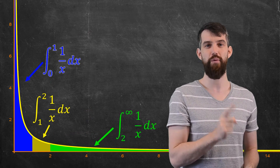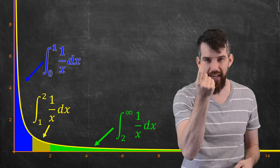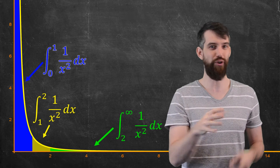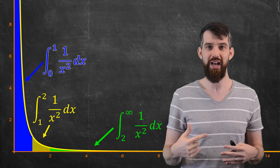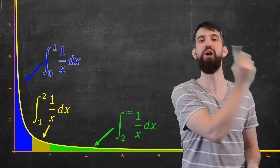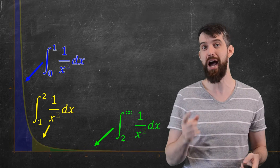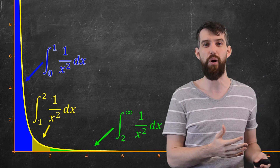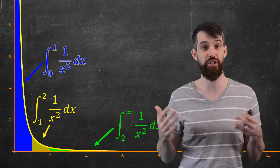Let me give a different example. Instead of 1 over x, let's change the function just a little bit to 1 over x squared. Because x squared is bigger than x and we're dividing by it, what happens is the green region gets a bit smaller and the blue region gets a little bit bigger compared to 1 over x. The original integral for 1 over x goes to infinity — but what about for 1 over x squared?